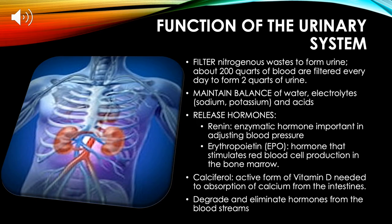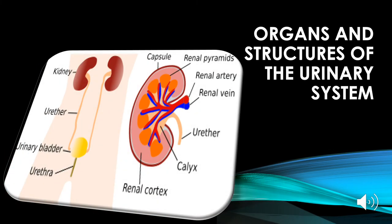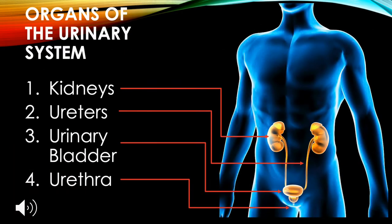Erythropoietin, or EPO, is a hormone that stimulates red blood cell production in the bone marrow. Calciferol is the active form of vitamin D, needed for absorption of calcium from the intestines. The urinary system also degrades and eliminates hormones from the bloodstream.